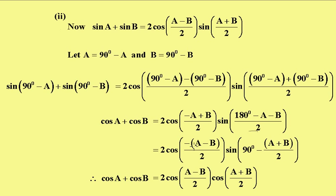And of course this is 2 cos of -(A-B)/2. This now becomes divided by 2, and this becomes, careful with the sign, minus (A+B)/2. Now the cos of a minus is just stays as cos. Cos of -(A-B)/2 is simply the cos of (A-B)/2. And of course the sine of 90° minus this becomes the cos of (A+B)/2.